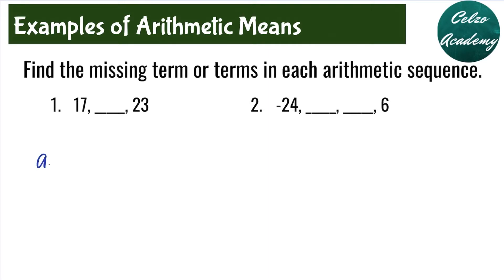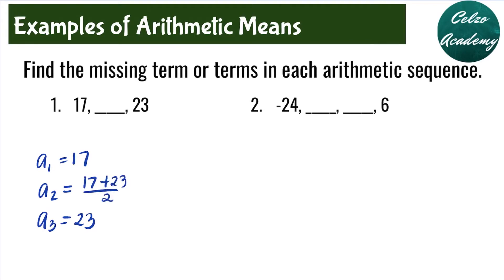For question number one, a sub 1 is 17, a sub 2 is missing, and a sub 3 is 23. If there is only one missing term, you can easily find it by getting the average of the first and the third terms. That means we do 17 plus 23 divided by 2, which is 40 divided by 2, or 20. So the missing term is 20, and the common difference is 3: 17 plus 3 is 20, and 20 plus 3 is 23.